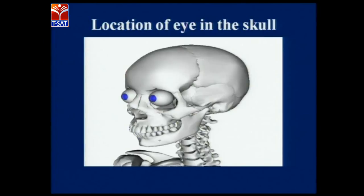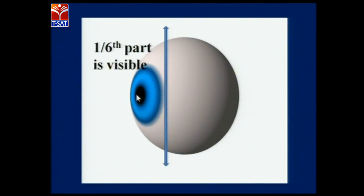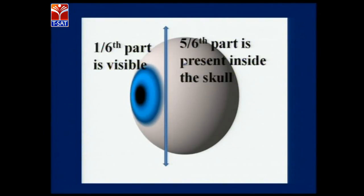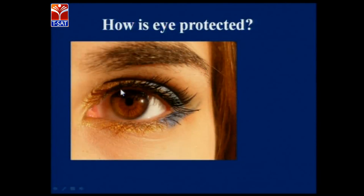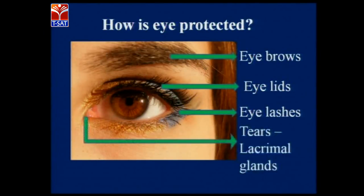Today we are going to see in detail about the visual sensory organ — the eye. We have a pair of eyes present in the skull in the eye sockets. In these eye sockets, the eyeballs are present — these white-colored structures are the eyeballs. Whatever eye we see externally is just one-sixth of the eyeball; the rest of the five-sixths is present inside the skull and is not visible to us. The eye is a very important organ so it has to be protected. The skull protects it, along with the eyebrows above the eyes, the eyelids which cover the eyes, the eyelashes on the eyelids, and the tears produced by the lacrimal glands.